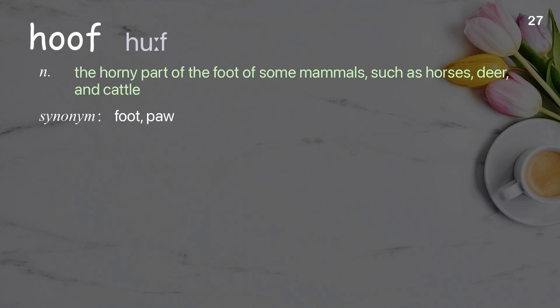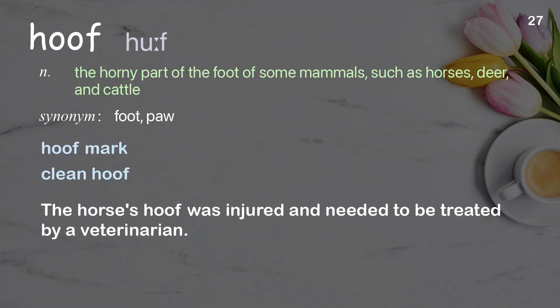Hoof: the horny part of the foot of some mammals such as horses, deer, and cattle. Examples: hoof mark; clean hoof. The horse's hoof was injured and needed to be treated by a veterinarian.